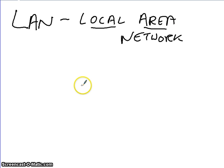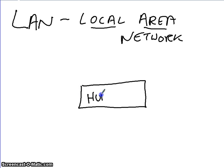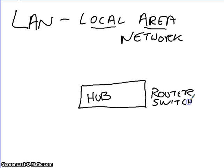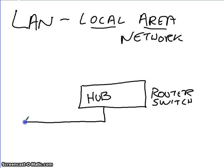All devices in your house connect to a central hub, which is also known as a router or switch. You need certain things to set up a local network — you need some kind of router or switch in the middle, and then we can connect other devices through this router or switch.